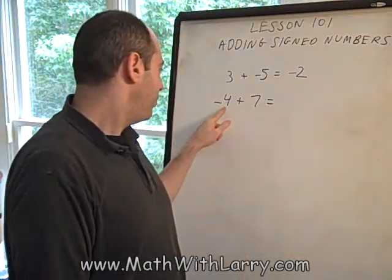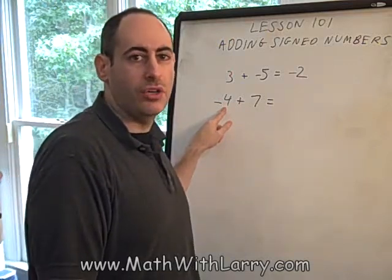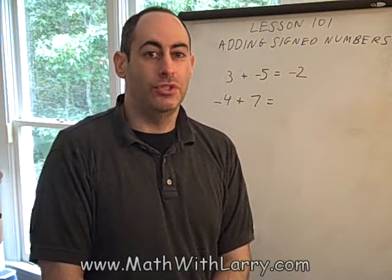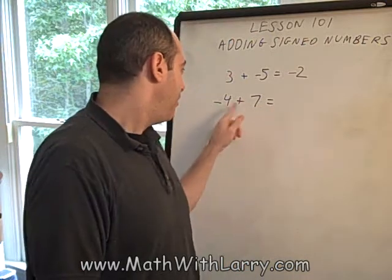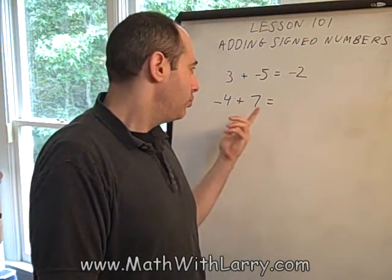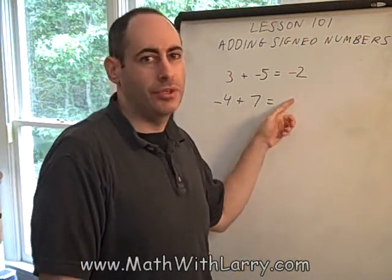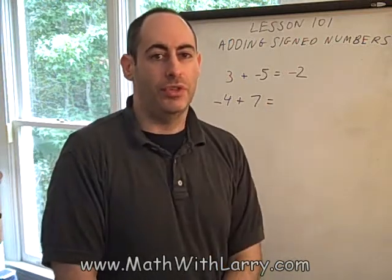So for this example, I'm going to think of this as I owe you four dollars, but I have seven dollars. Now, right off the bat, that's a good situation for me because I have more money than I owe. So right off the bat, I know the answer is positive. I don't have to bother to write a plus sign. Without the plus sign, we assume that the answer is positive.